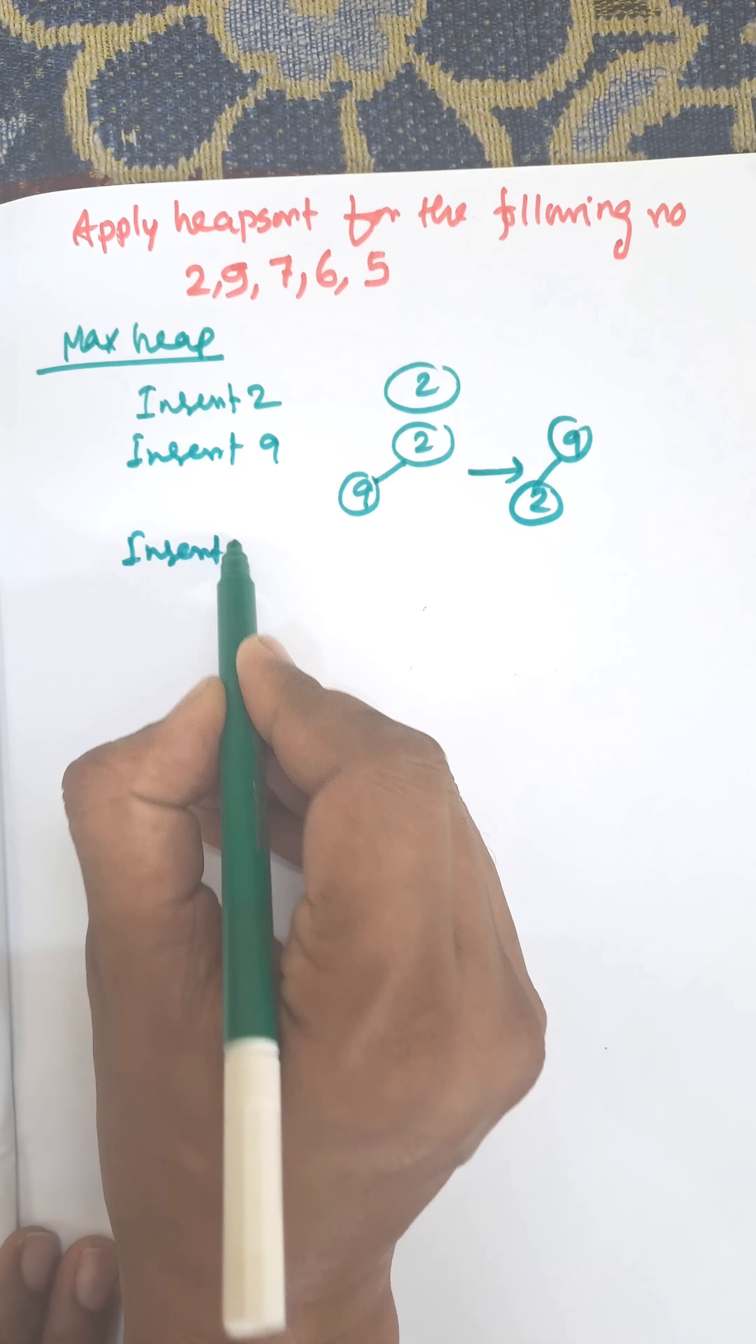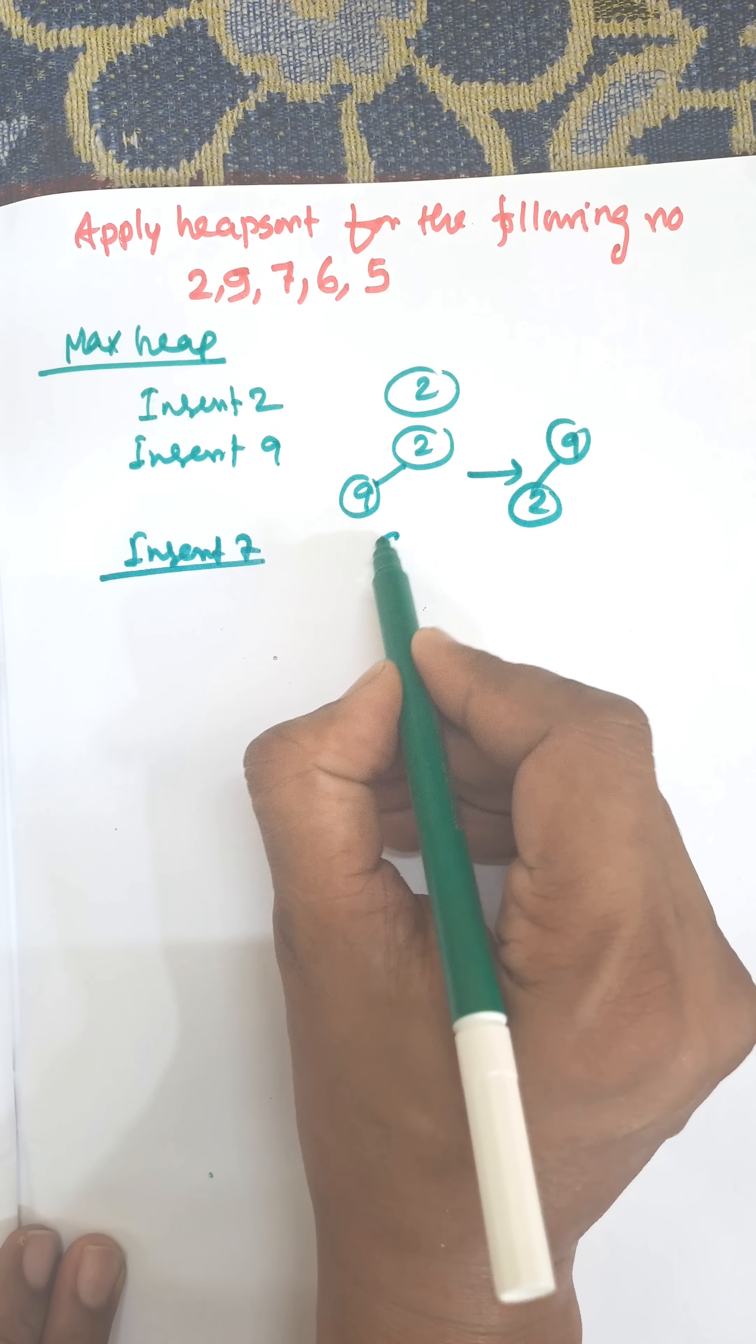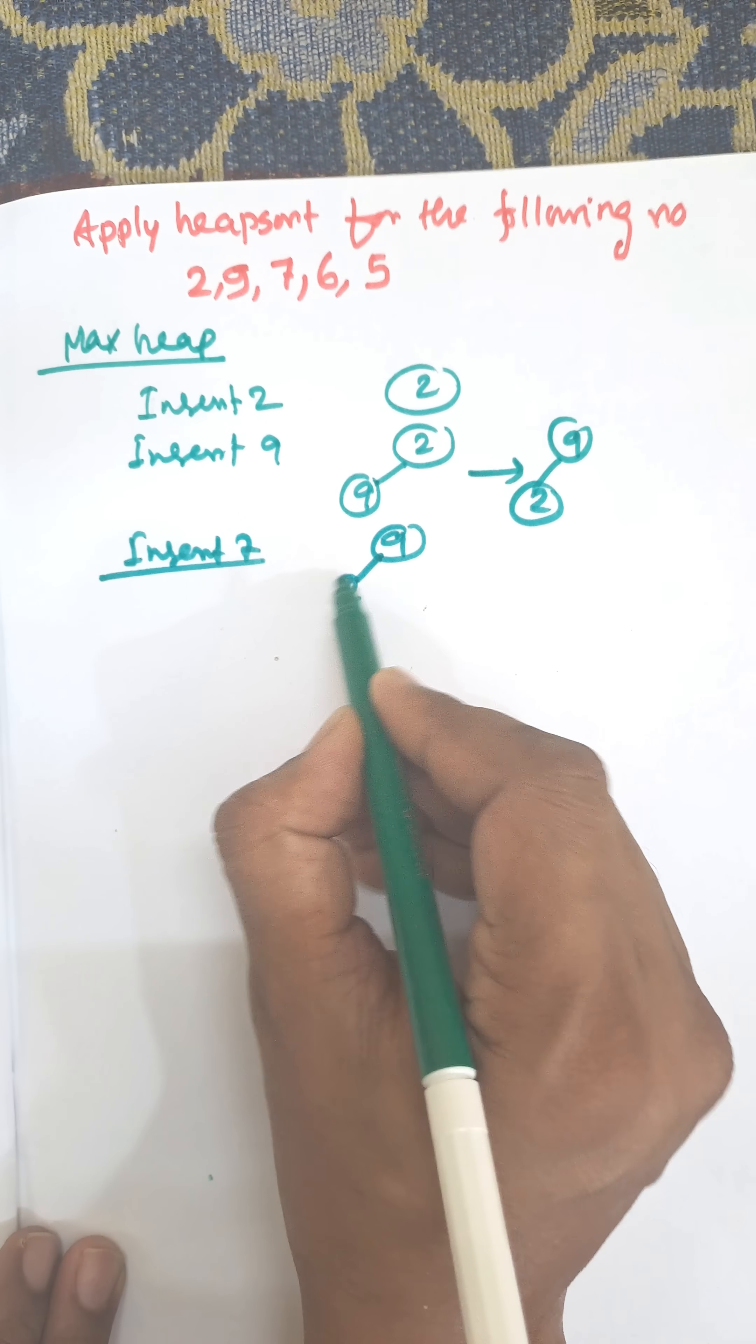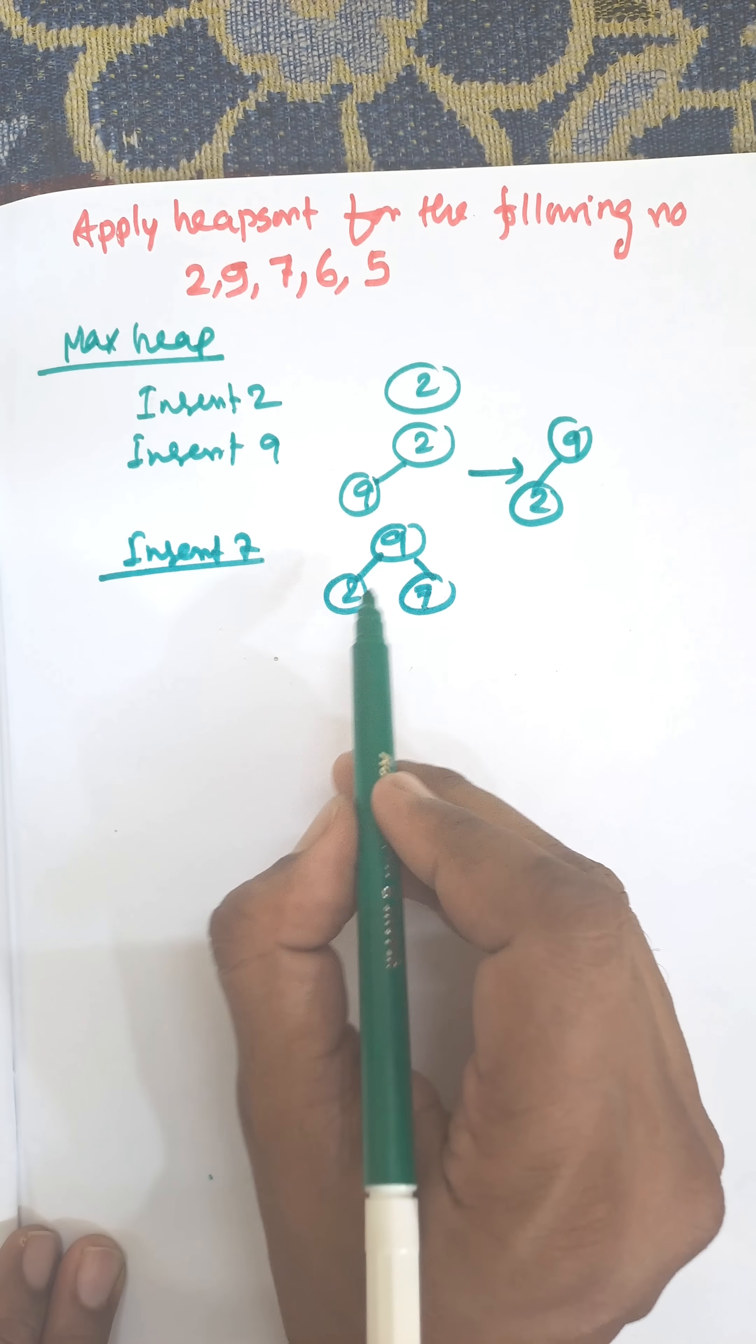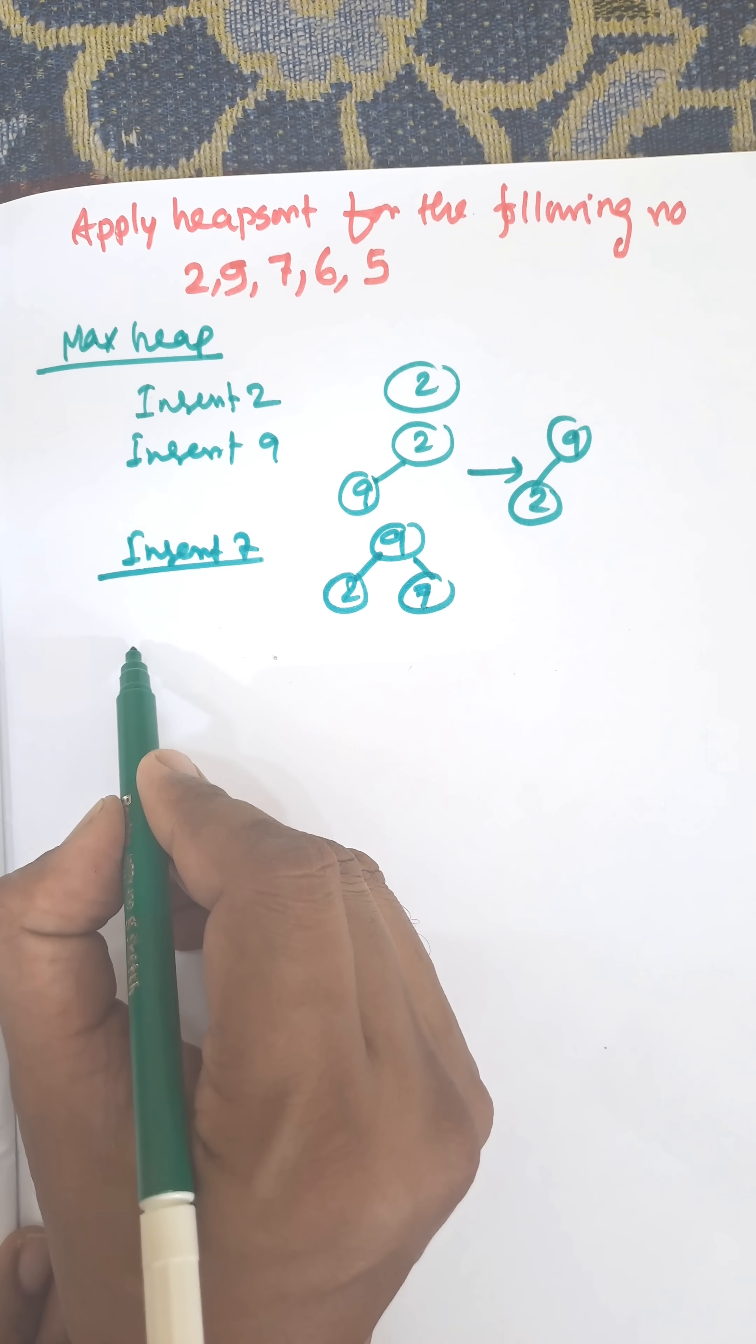Next, insert 7. 7 will be the left child of 9. We need to complete left to right. Now it is a MaxHeap.